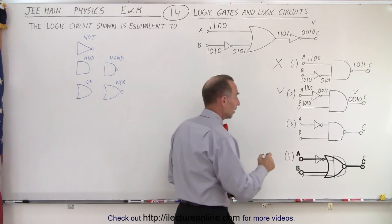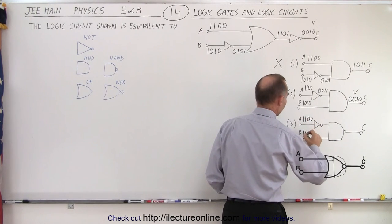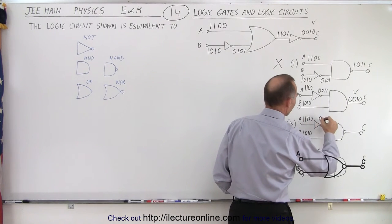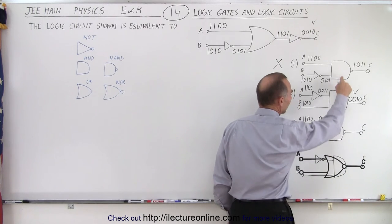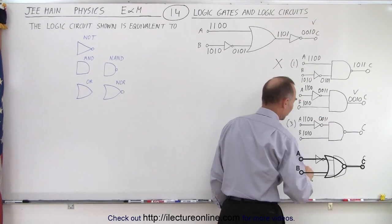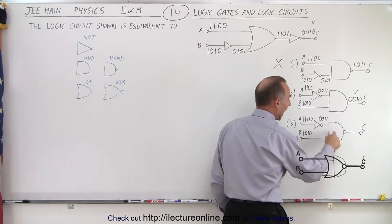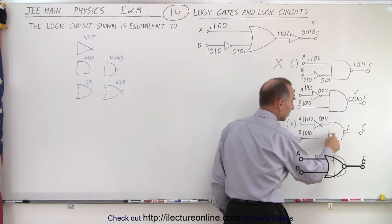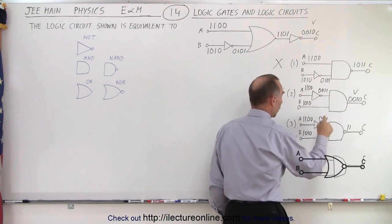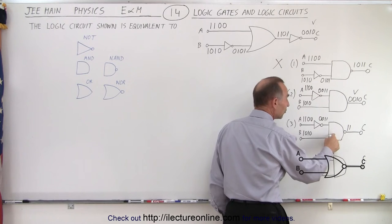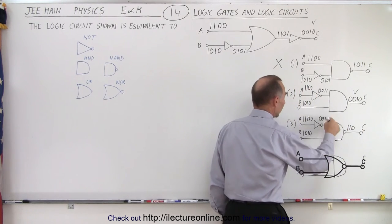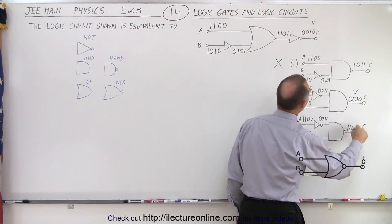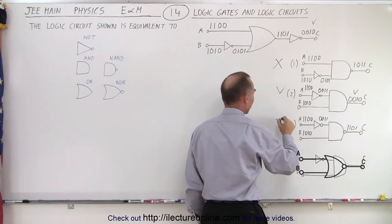For completeness, let's check circuit 3. Inputs again: 1, 1, 0, 0 and 1, 0, 1, 0. The NOT gate turns the bottom into 0, 0, 1, 1. With this gate: 0 and 1 → 0; 0 and 0 → 0; 1 and 1 → 1; 1 and 0 → 0 — same output pattern actually. But the circuit structure differs from circuit 2, and the output does not match 0, 0, 1, 0, so circuit 3 is not correct.